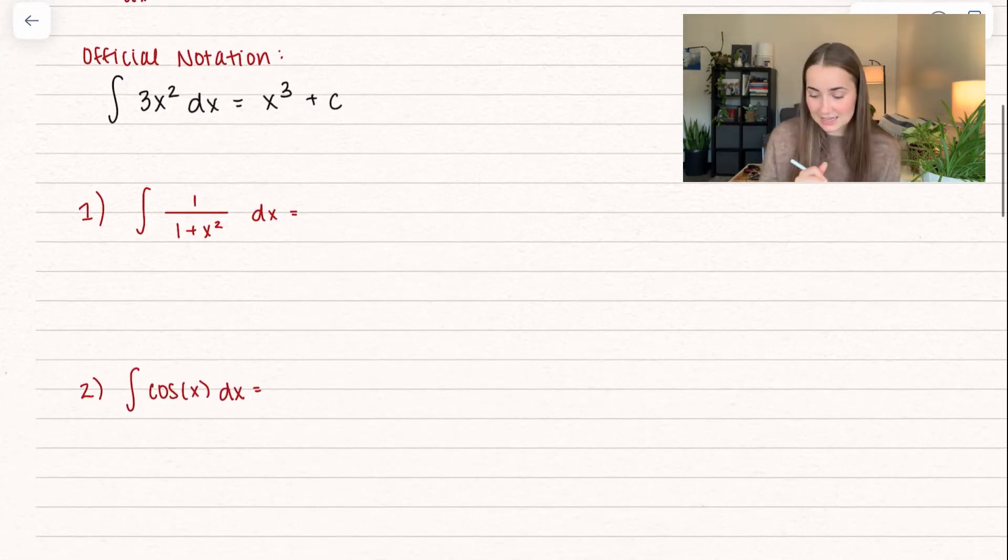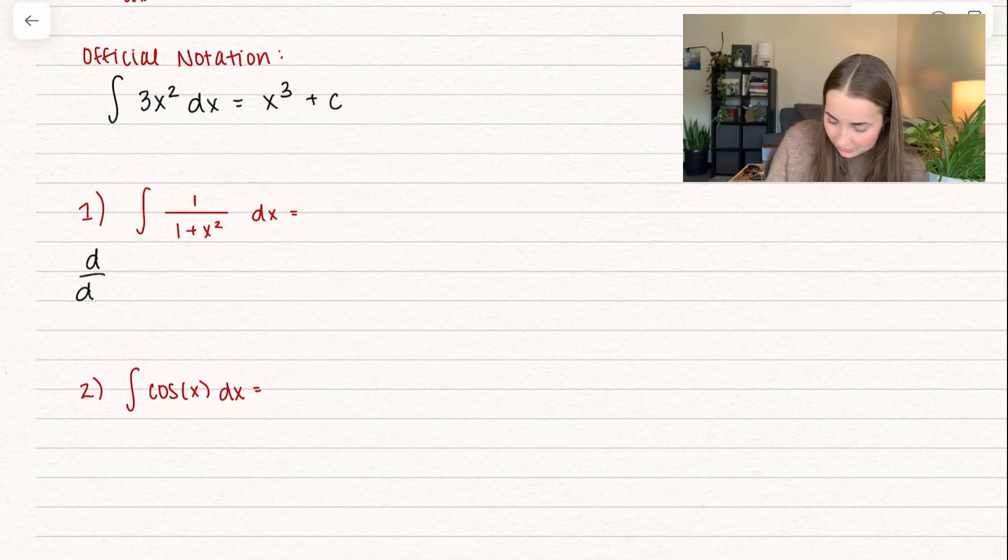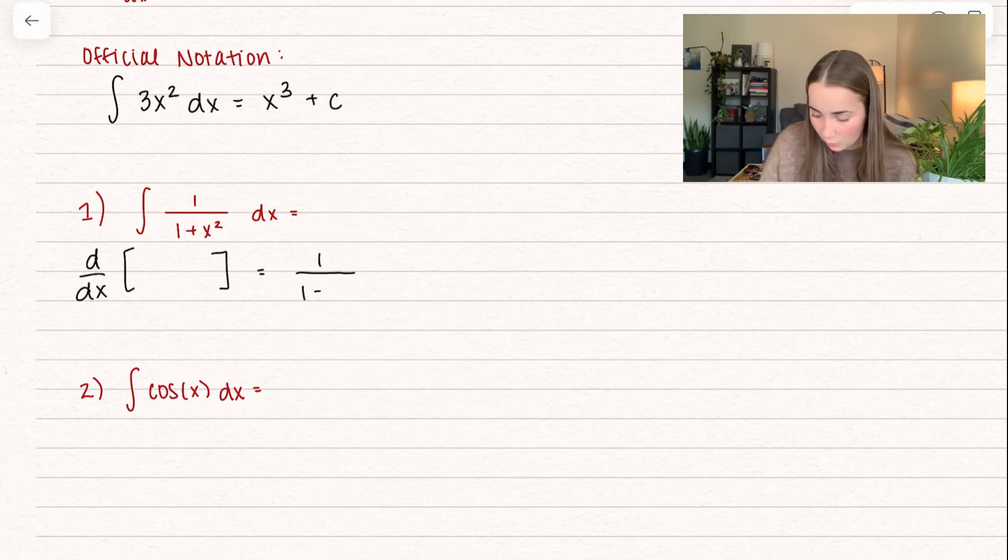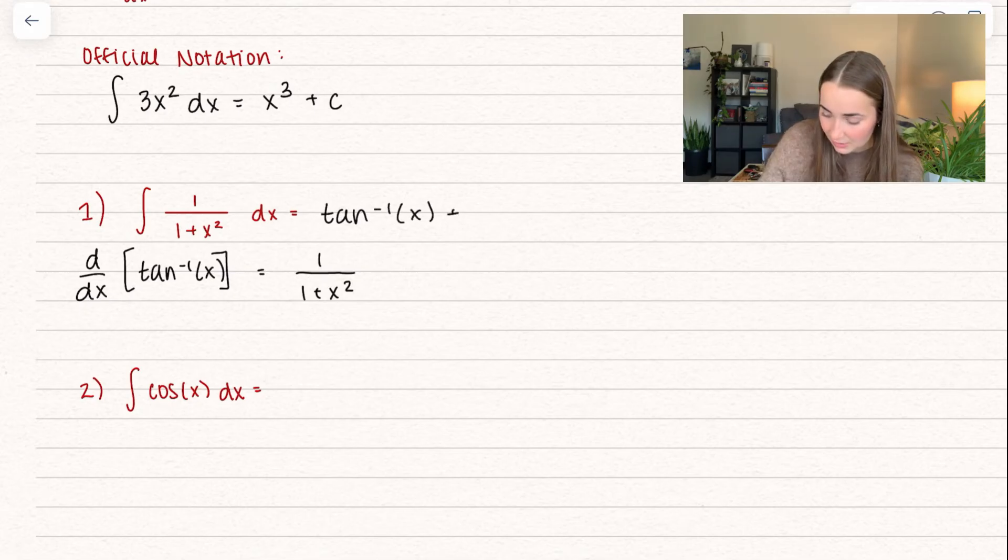So here we have the antiderivative of 1 over 1 plus x squared, dx. So let's set this up in a way that makes a little more sense to us. I want to take the derivative of something, that's what we're trying to look for, and when I take the derivative of it, I get 1 over 1 plus x squared. If we remember, this is going to be inverse tangent. So that tells me this is my solution, the inverse tangent, but we can't forget we have to add on some constant.